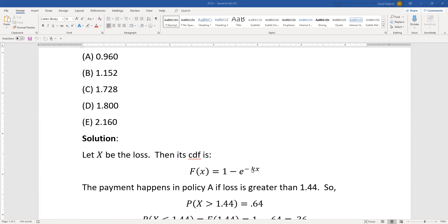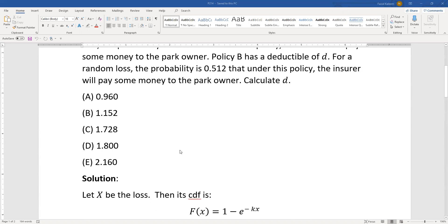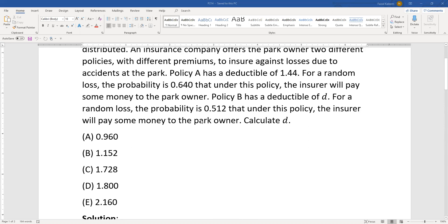Remember that the k we're going to get is not going to be the mean. Policy A has a deductible of 1.44, and the probability is 0.64 that the insurer will pay money to the park owner. The money is paid if the loss is greater